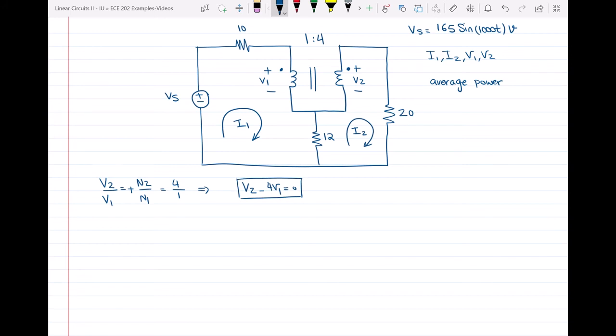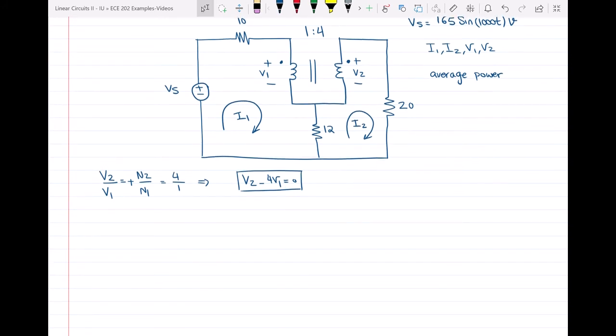The second equation is the relationship between the currents, the ratio of the currents. I know that we have I2 over I1 that is equal to N1 over N2. For the sign I can see that my current I1 is entering the dotted node and I2 is leaving the dotted node. So we're going to have a positive sign over here and that would be one over four.